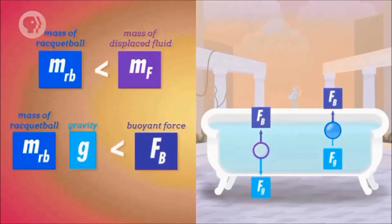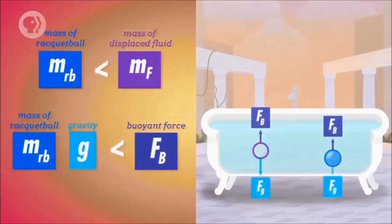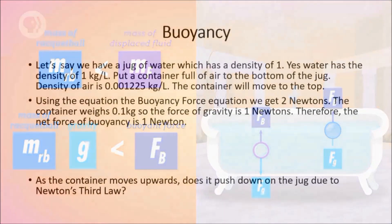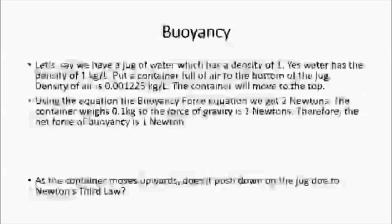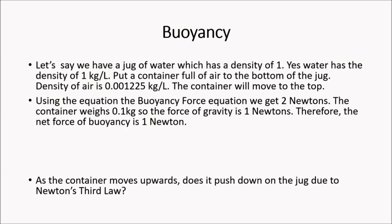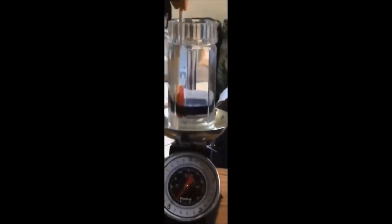The buoyant force is equal to density times gravitational acceleration times the volume of fluid displaced. Let's say we have a jug of water with a density of 1 kilogram per liter. Put a container full of air to the bottom of the jug and the container will move to the top. The volume of the container is 200 millilitres. Using the buoyancy force equation we get approximately 2 Newtons. Subtract the 1 Newton of force due to density and you have a net force of 1 Newton, which equates to 100 grams on the scale.